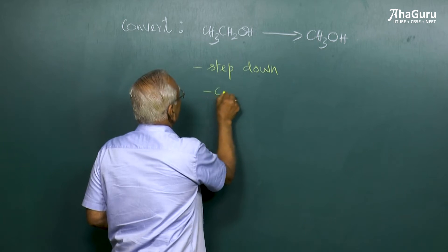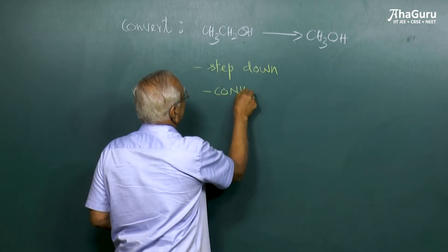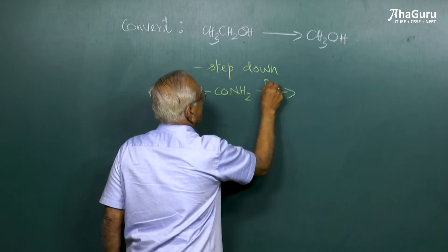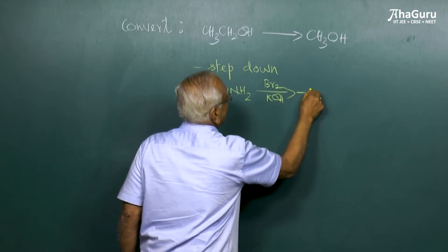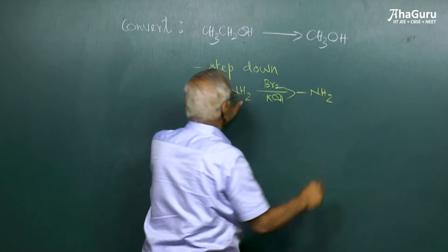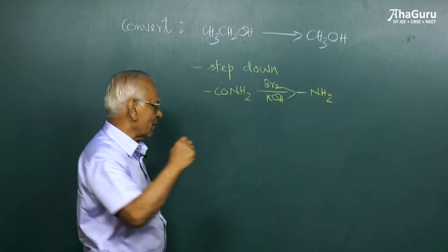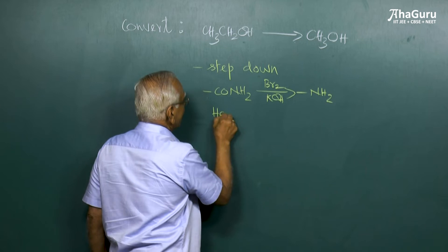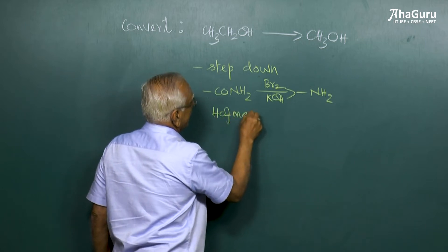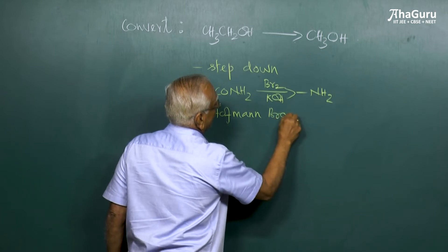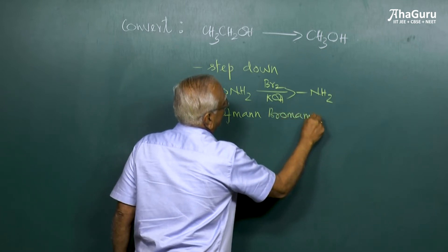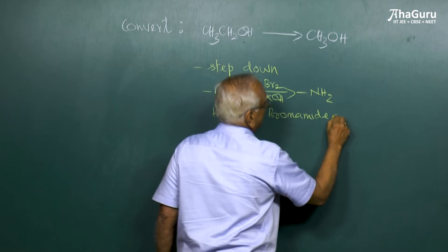You must know that an amide on treatment with bromine and KOH is converted to NH2. One carbon atom goes away, and this is a very famous example of Hoffman bromamide degradation or Hoffman bromamide rearrangement degradation reaction.